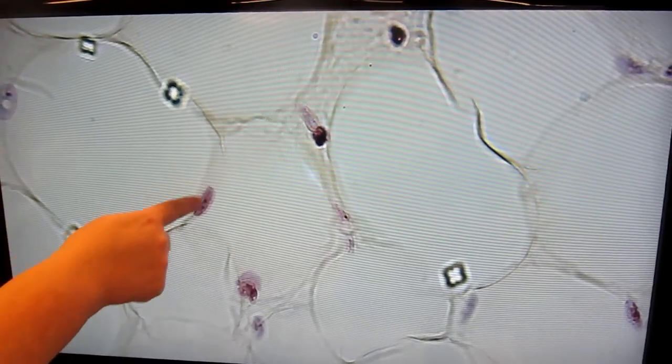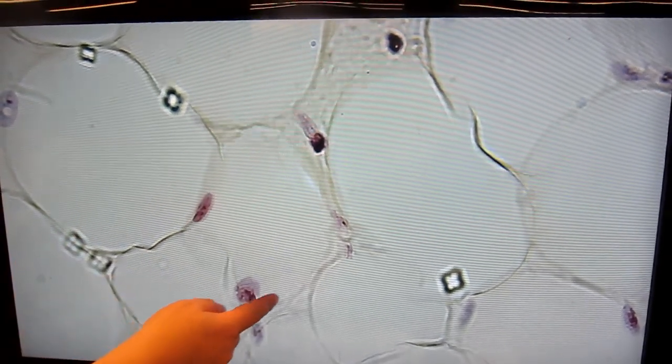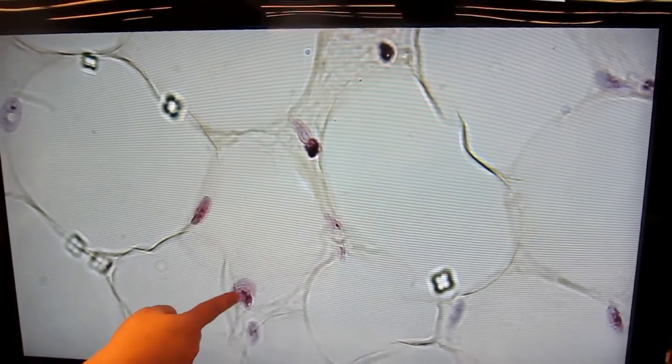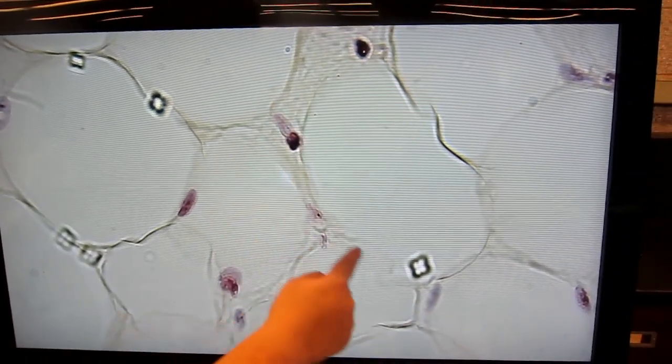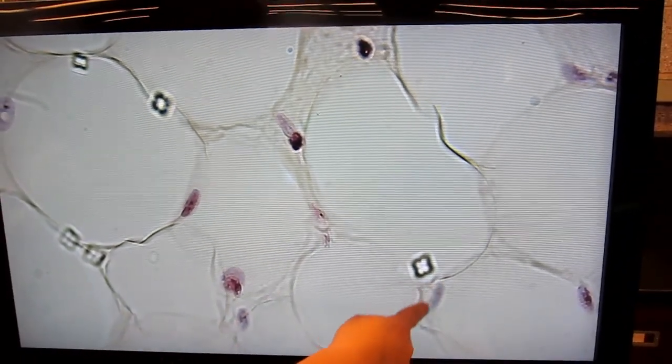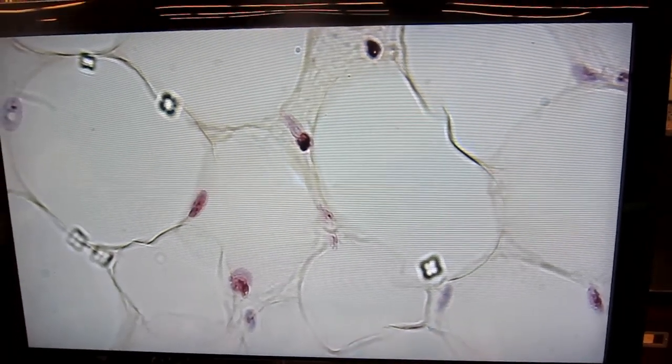This particular cell you can see a nucleus. This one, kind of hard to tell, there might be one here. This one doesn't look like you see a nucleus at all. This one either. And this one's a little bit out of our frame. That one might have a nucleus.